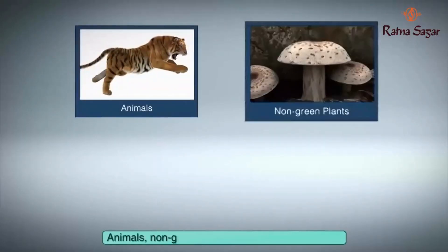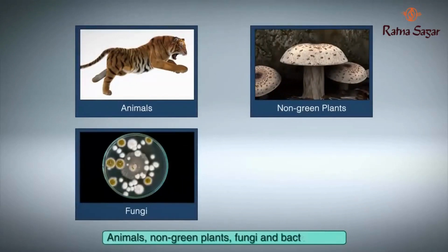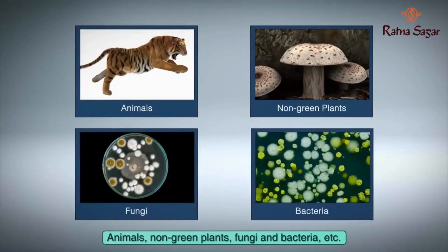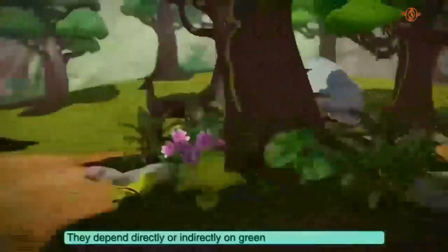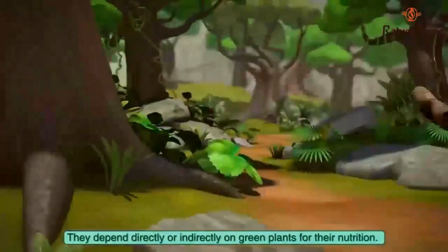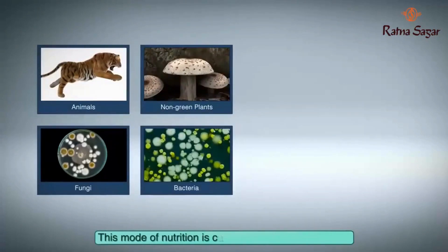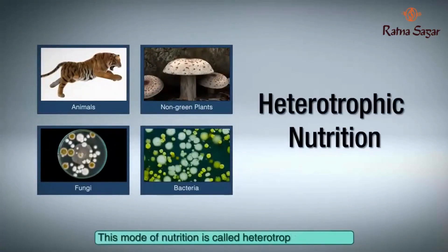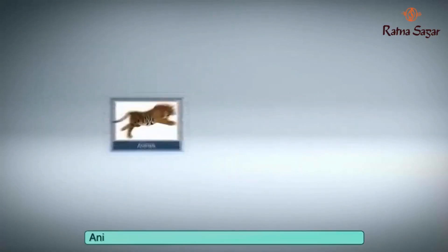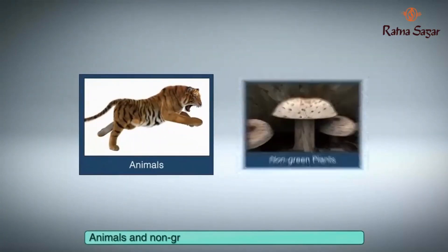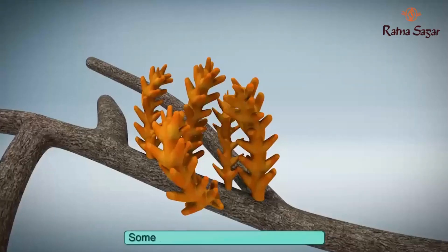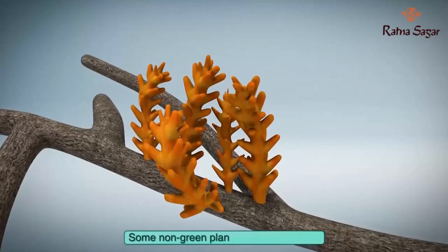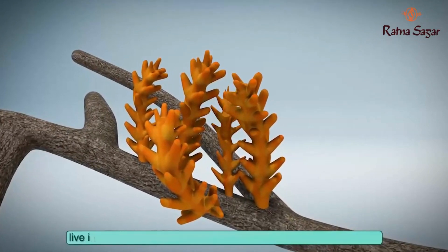Animals, non-green plants, fungi, and bacteria cannot prepare their own food. They depend directly or indirectly on green plants for their nutrition. This mode of nutrition is called heterotrophic nutrition, and such organisms are known as heterotrophs.